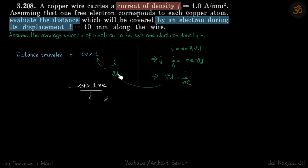So we just put that value there and we get our answer. Distance travelled is average velocity of electron times L times NE by J.